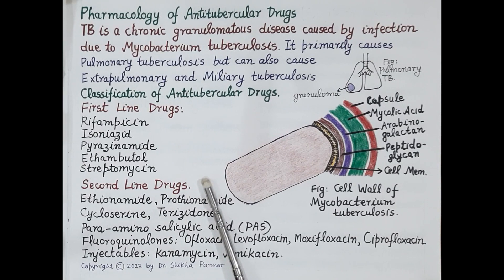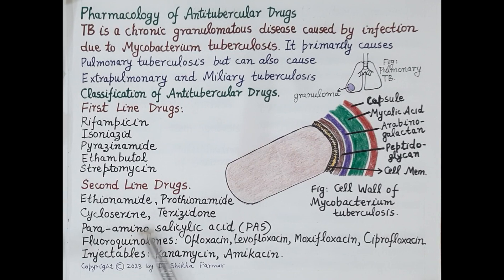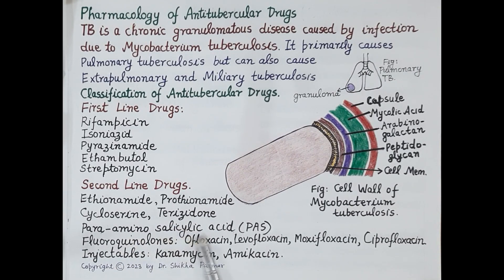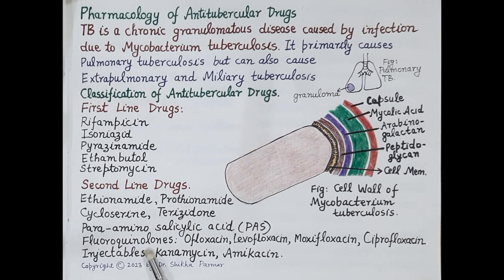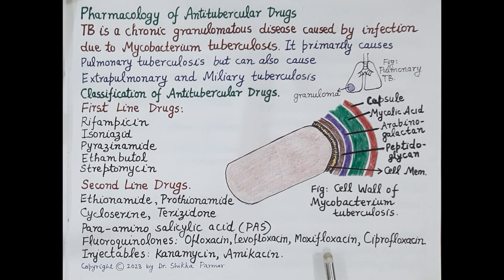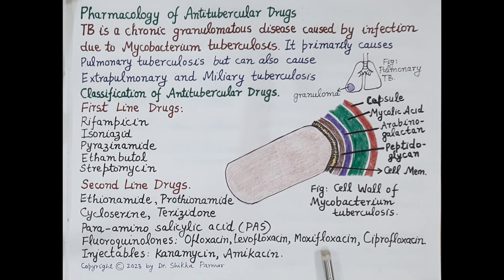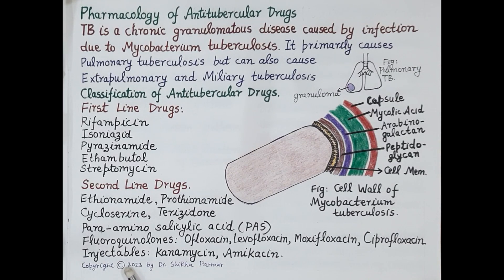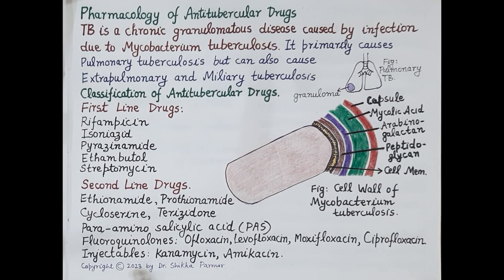Second-line drugs include ethionamide, prothionamide, cycloserine, terizidone, and para-aminosalicylic acid. Fluoroquinolones such as ofloxacin, levofloxacin, moxifloxacin, and ciprofloxacin are also second-line agents — moxifloxacin is the most effective fluoroquinolone against Mycobacterium tuberculosis. Injectable drugs include aminoglycoside antibiotics, namely kanamycin and amikacin.